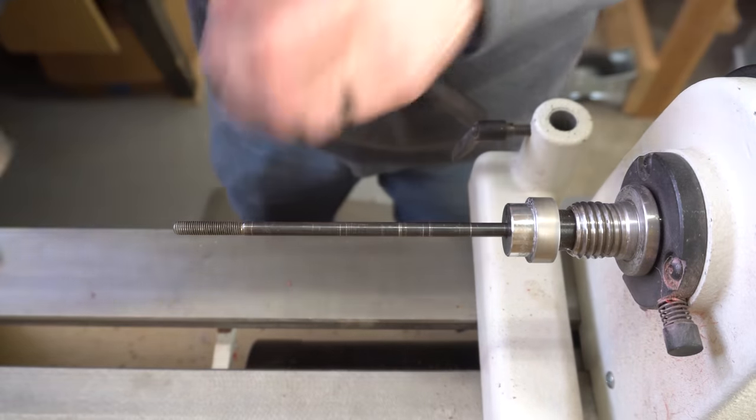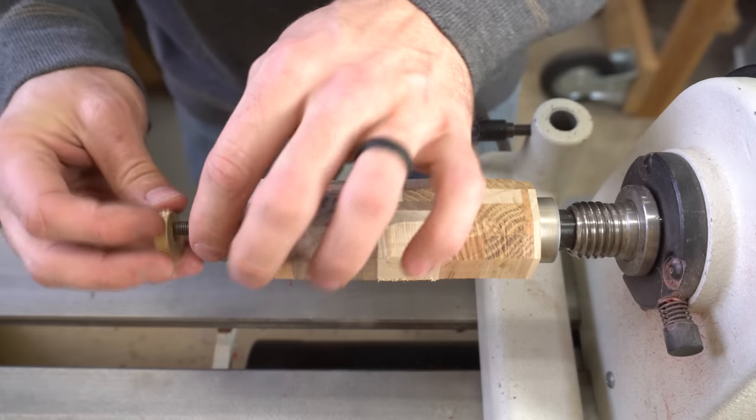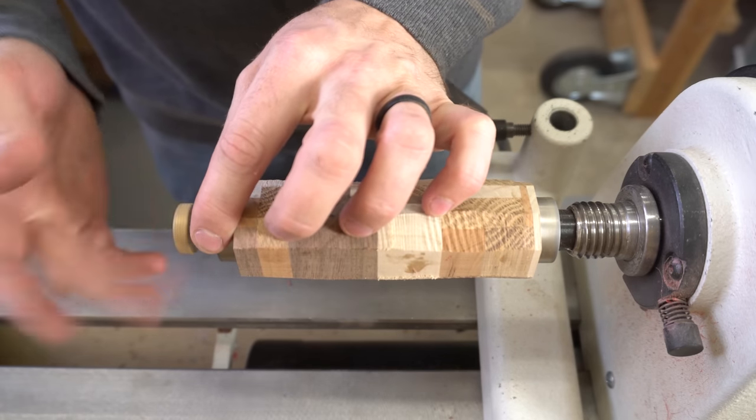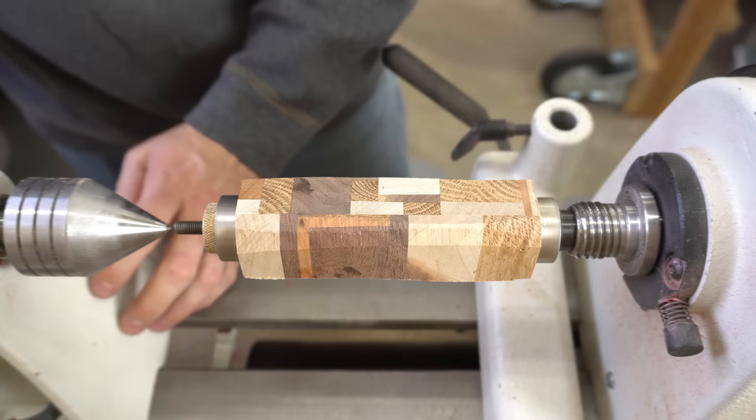Next, I finally set the blank up on the lathe. The bushings just use a standard 7mm pen mandrel. If I had a long one, I could turn both parts of the cigar holder at once. Since this mandrel is too short for that, I just have to turn one piece, then the other separately.